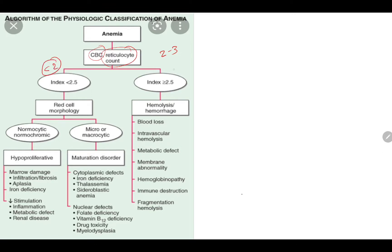If it's less than 2, it's hypoproliferative. And if more than 3, it's hyperproliferative. In less than 2, we have to look for the red cell morphology. It can be normochromic normocytic or microcytic or macrocytic. In normochromic normocytic, it may be due to hypoproliferative state. It can be due to marrow damage due to infiltration of fibrosis or any aplasia, IDA and decreased stimulation of bone marrow, which is due to inflammation, metabolic defect or renal disease.